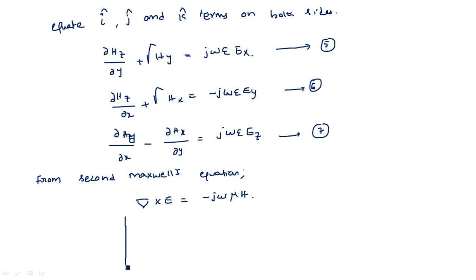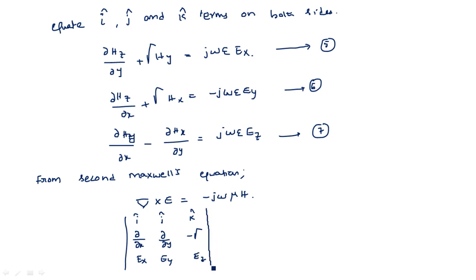We perform the same operation as before. We write the determinant with i-cap, j-cap, k-cap; ∂/∂x, ∂/∂y, −γ (substituting ∂/∂z = −γ); and Ex, Ey, Ez. This equals −jωμ times (i-cap Hx + j-cap Hy + k-cap Hz). We expand the determinant and equate terms.